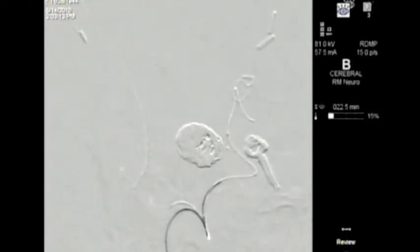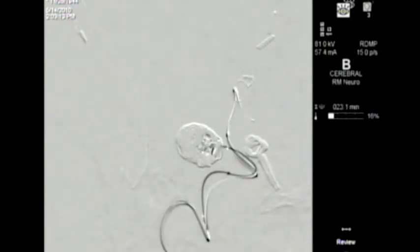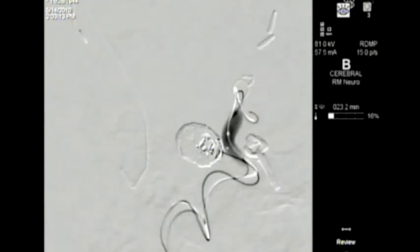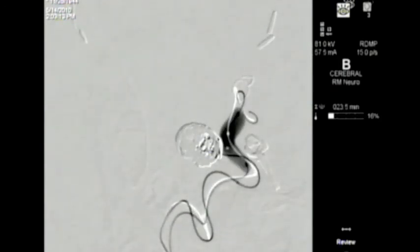Here we can see another platinum coil coming up through the microcatheter delivering into the aneurysm dome. The balloon is inflated across the neck of the aneurysm again. This soft platinum coil goes inside the remaining open spaces within the aneurysm which show up as black in the otherwise silver appearance of the aneurysm coil mass.